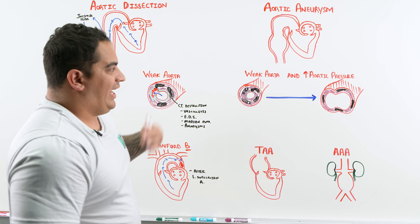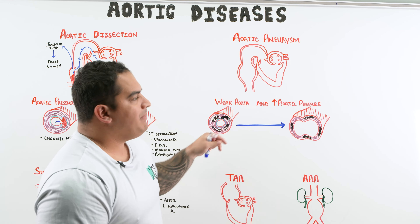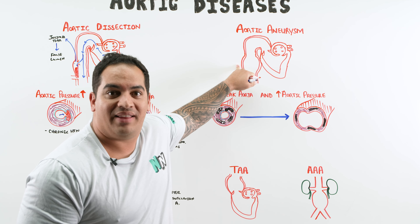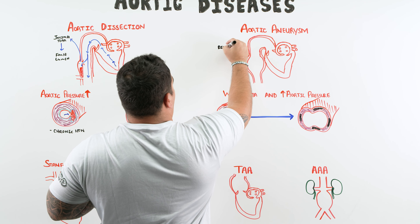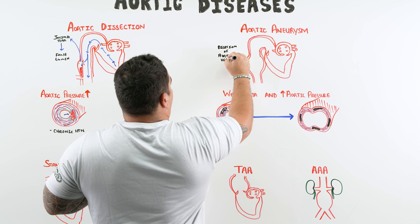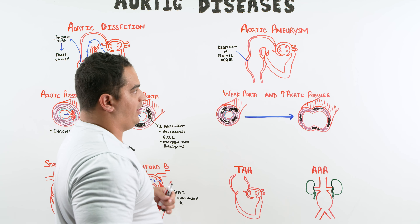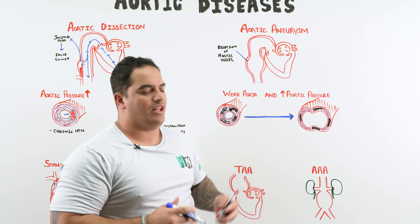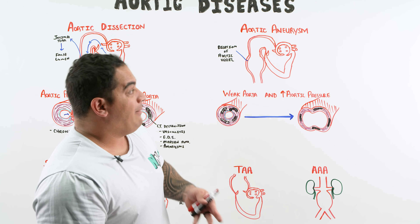Now for aortic aneurysms — this is simply dilation of the aortic vessel wall. You'll notice a potentially monstrous dilation. Anything greater than three centimeters within the abdominal aorta is considered abnormally large. We have to ask ourselves: why is there dilation of the aortic vessels?